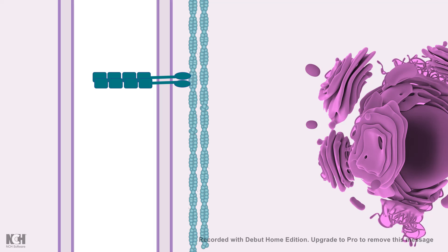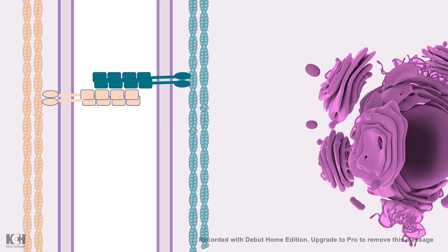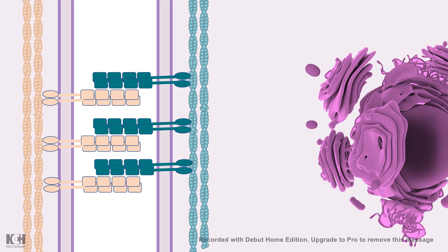The cadherin molecules are attached to the actin microfilaments by several adapter proteins called catenins, and on the other side they are attached to another cadherin molecule. There is a homophilic interaction between two cadherin molecules from the two sides of the cell, and each cadherin molecule is connected to the actin cytoskeleton from the interior of the cell. Since each individual cadherin connection is weak, there are multiple connections between cadherins arranged in an array.